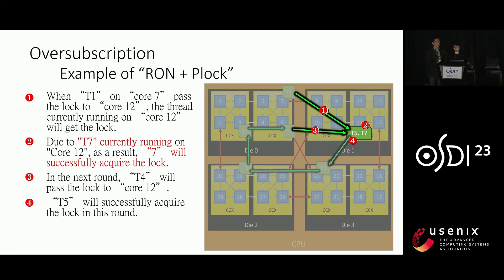Let's take a closer look at an example of RUN-PLock, our modified algorithm for over-subscription. Assume T1 is running on core 7 and holds the lock. When T1 passes the lock to core 12, the thread currently running on core 12 will get the lock. Let's say T7 is currently running on core 12 — thread seven successfully acquires the lock. In the next round, when thread four passes the lock to core 12 and the lock is released, thread five will be the next to acquire the lock on core 12. This demonstrates how RUN combined with PLock effectively distributes the lock among threads on the same core, preventing transfer to a scheduled-out thread.